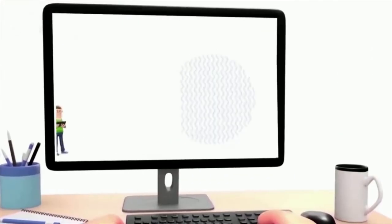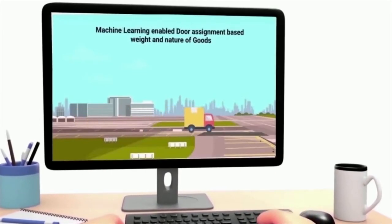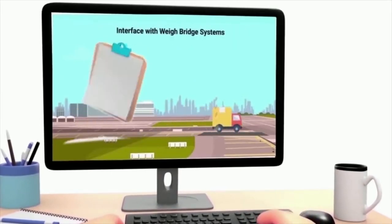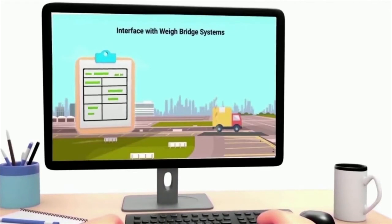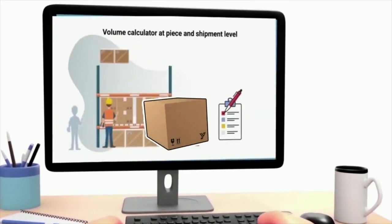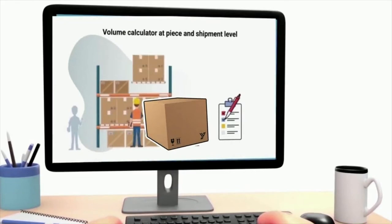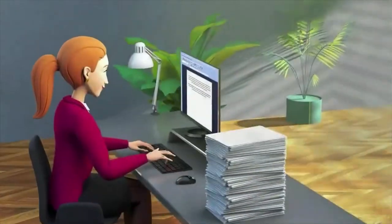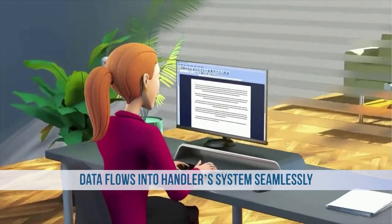Well-integrated systems like automatic weighbridge which transmits data to the handler system directly without any manual intervention. 3D volume calculators record the dimensions for accurate weight and volume at piece and shipment level. Handlers receive shipment data which is directly used to create manifest, load advice, and cargo oxygen.